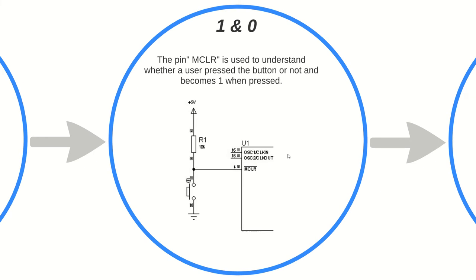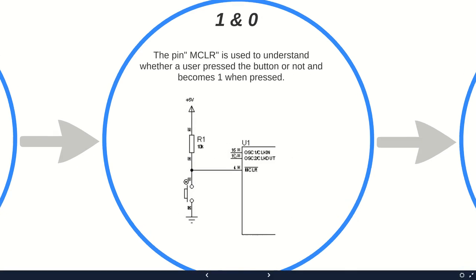Let's look at one and zero and what they mean. The pin MCLR is used to understand whether someone presses the button or not. It becomes one when the button is away — not pressed — and when it is pressed, the button connected to pin MCLR applies 5 volts to pin 4.